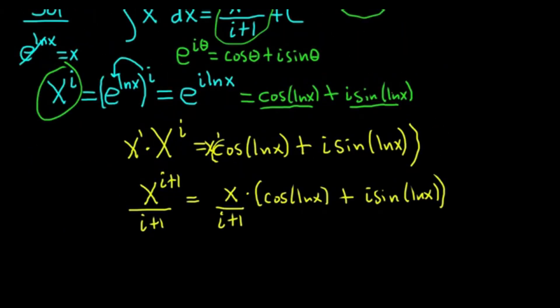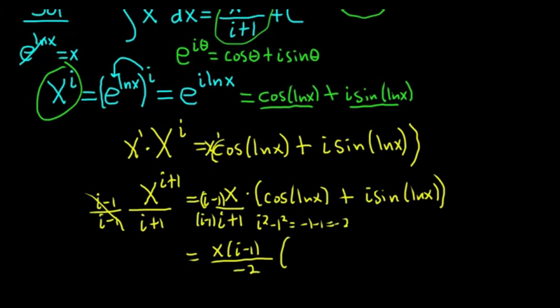So what we'll do is we'll multiply by 1 in a clever way. We'll multiply by i minus 1 over i minus 1. So on the left-hand side, who cares? We're not really going to use it. But over here we are. This is where the magic happens. So we end up with, I'm going to leave this as x, i minus 1. On the bottom we have i minus 1, i plus 1. That's i squared minus 1 squared. That's the difference of squares. It's negative 1 minus 1, so it's negative 2. Then here we have cosine ln x plus i sine ln x.